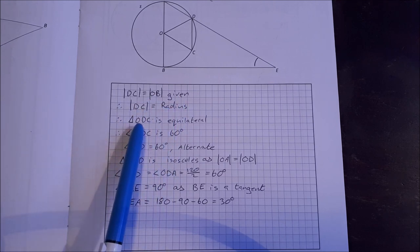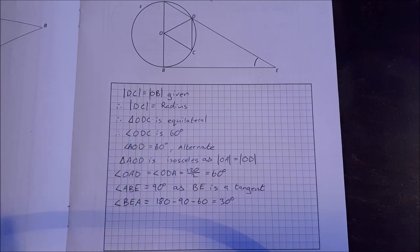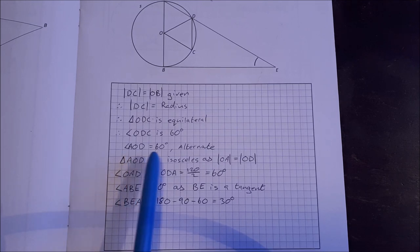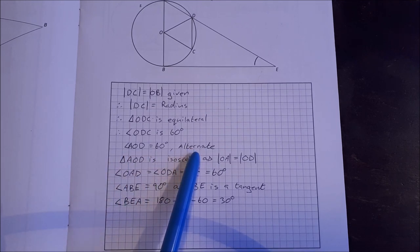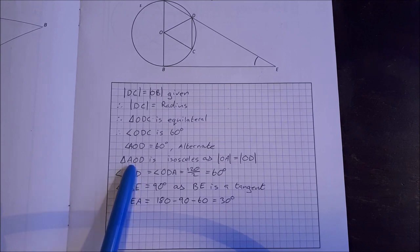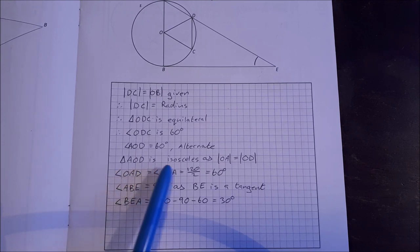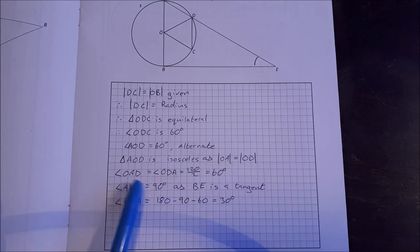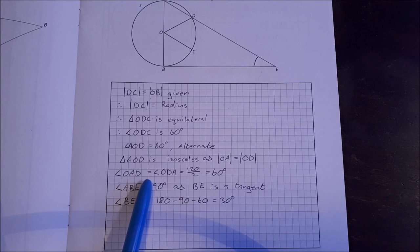The triangle ODC, therefore, is equilateral. That means each angle in it is 60 degrees. That means the angle AOD is also 60 degrees by alternate angles. That means the triangle AOD is isosceles as OA is equal to OD. They are both radiuses, OA and OD. So the angle OAD is equal to the angle ODA, which is 60.